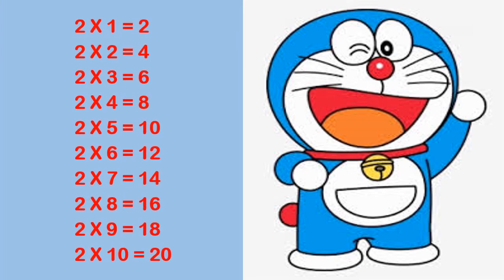Let us revise the table of 2. 2 1s are 2. 2 2s are 4. 2 3s are 6. 2 4s are 8. 2 5s are 10. 2 6s are 12. 2 7s are 14. 2 8s are 16. 2 9s are 18. 2 10s are 20.